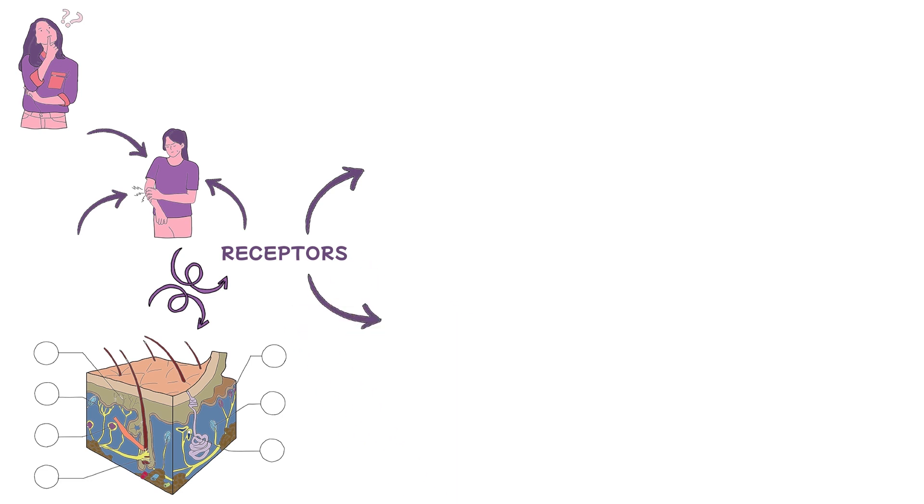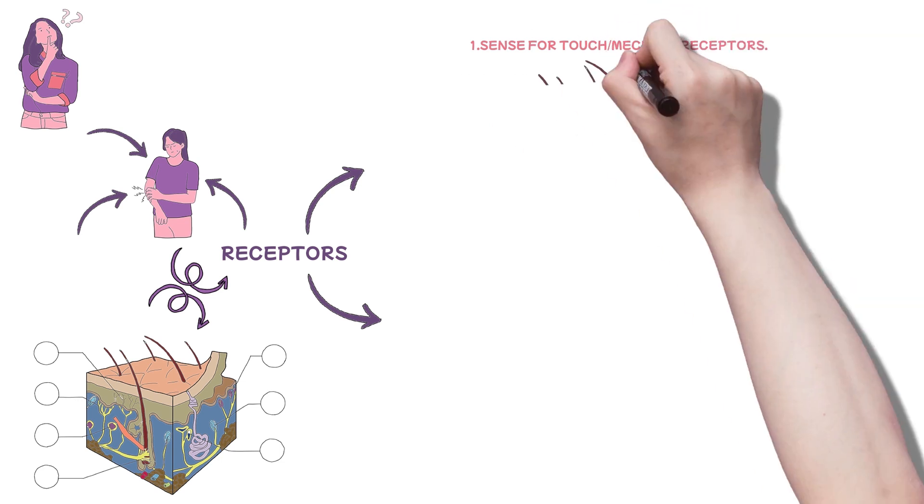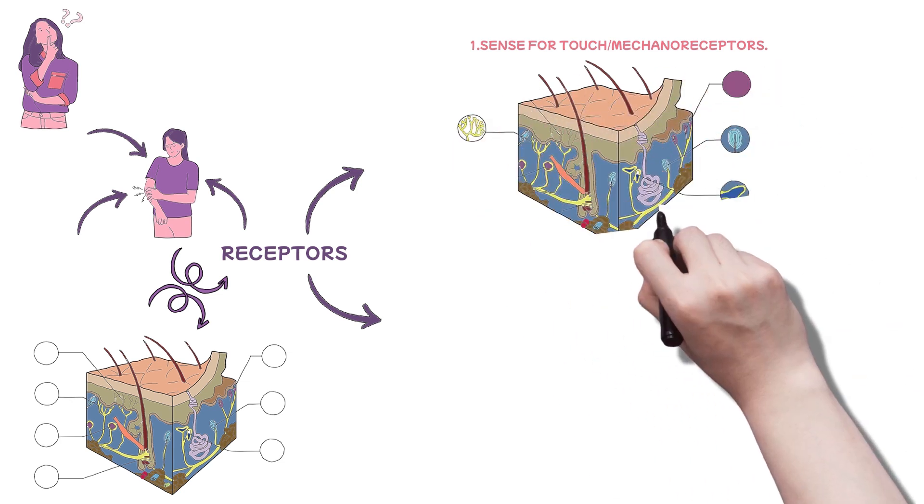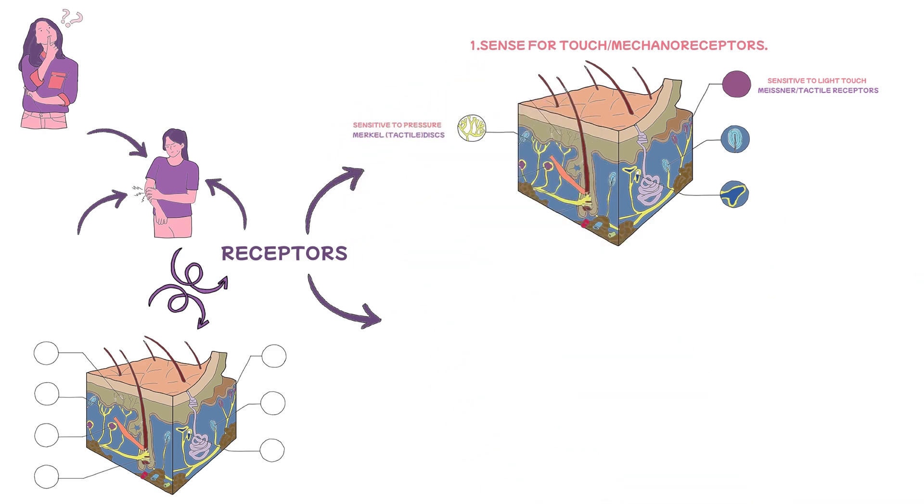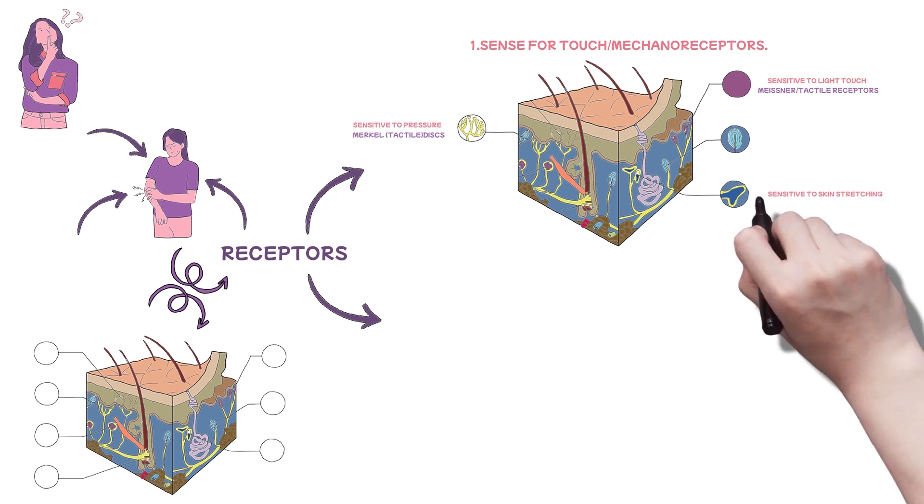The first are those used to sense for touch. In general, they are referred to as mechanoreceptors. However, there are various subtypes of mechanoreceptors, each attuned to specific stimuli. That is, those sensitive to light touch, the Meissner tactile receptors; those sensitive to pressure, the Merkel tactile discs; those sensitive to skin stretching, the Ruffini corpuscles; and finally, those sensitive to vibration, the Pacinian corpuscles.